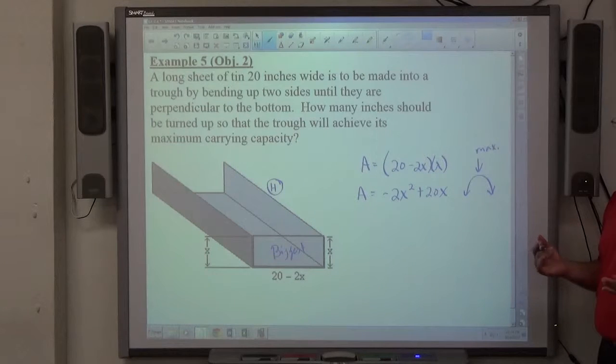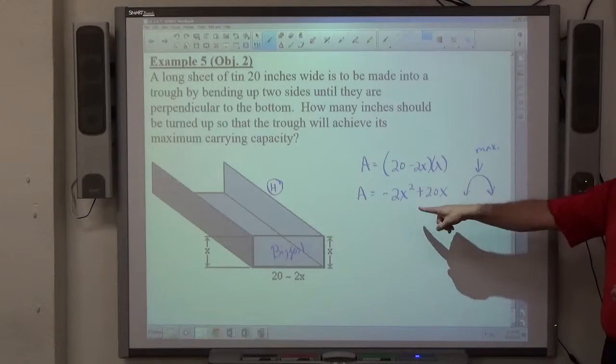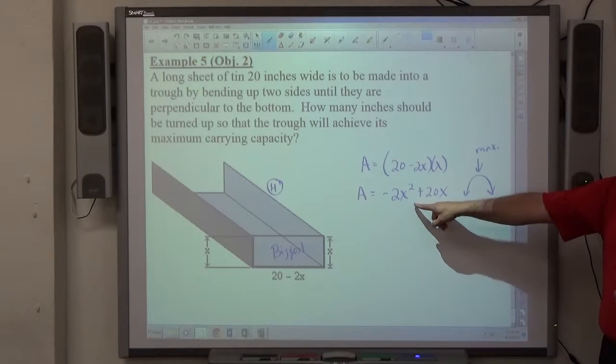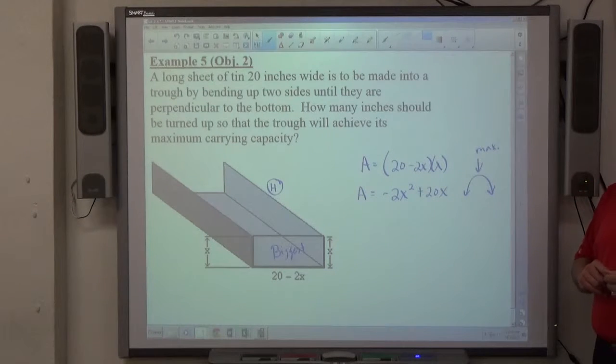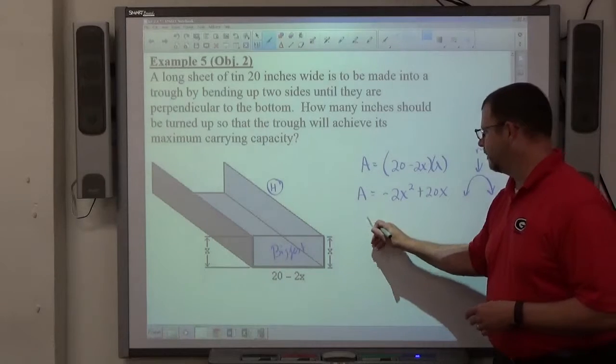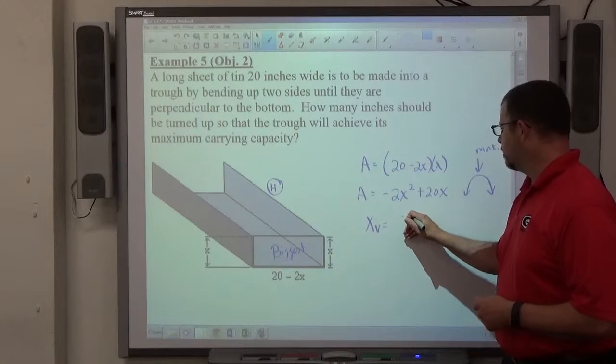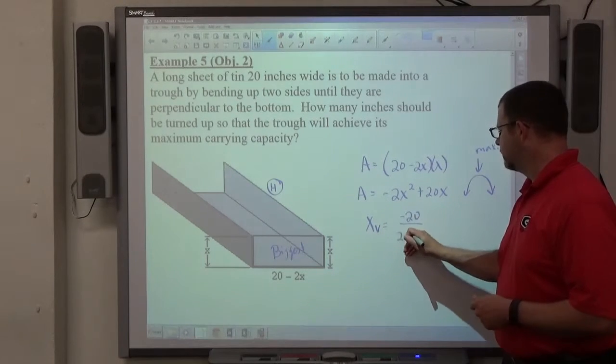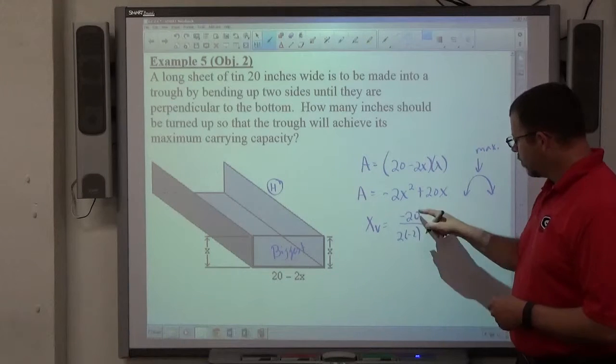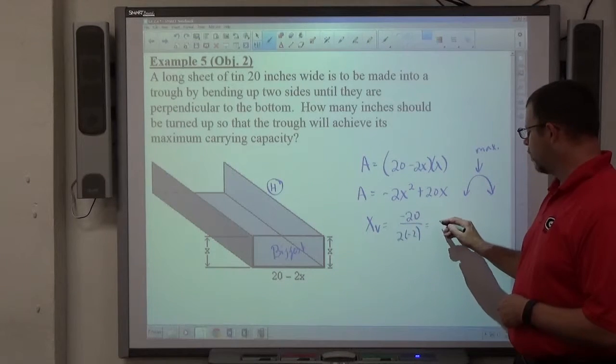Meaning it hits a maximum or a highest point. The maximum is going to occur at the vertex. So at this point, it's the same question the last question was. Determine the highest point this will attain. So we find the x-point of the vertex. x is negative b over 2a. So that's negative 20 over negative 4, which would be 5.